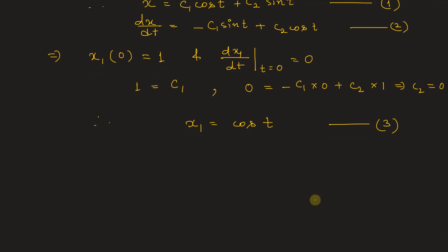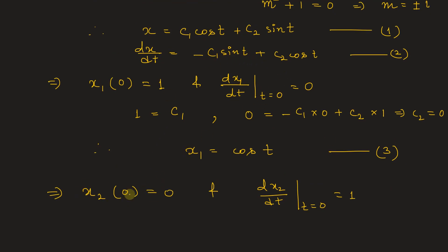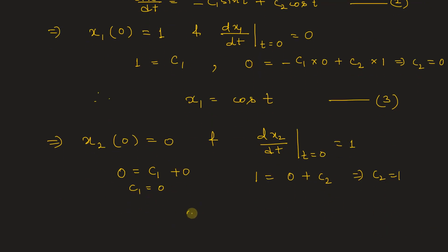Now for x2, it is given that x2(0) = 0 and dx2/dt at t=0 is 1. Substituting the first condition into equation one: 0 = c1 + 0, so c1 = 0. Substituting the second condition into equation two: 1 = c2, so c2 = 1. Therefore, x2 = sin(t). Let this be equation number four.